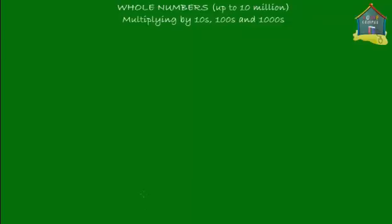Let me start with a simple example. Let's try to do some computation first and see if there's a pattern when you multiply by ten or hundreds or thousands. Let me give you a number like 43. So you have 43 and you try to multiply it by 10.